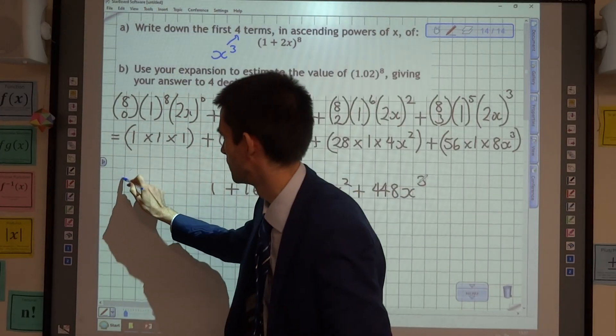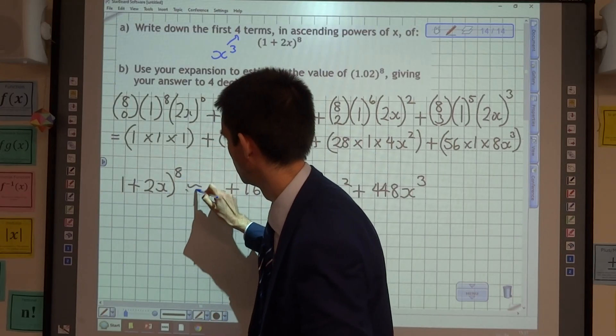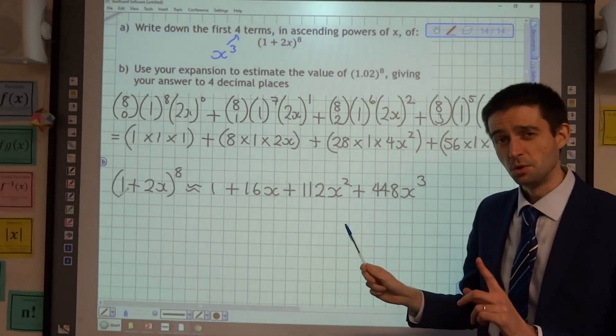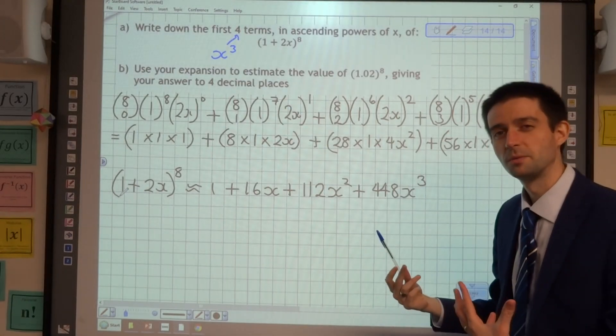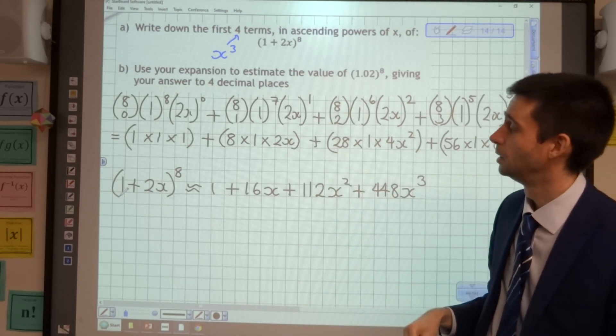And that's the first four terms, so that is approximately equal to (1+2x)^8. And the approximate symbol is really important here, because we're looking at approximation, and we'll understand why when we come to doing part b.